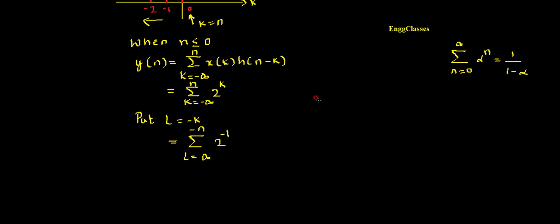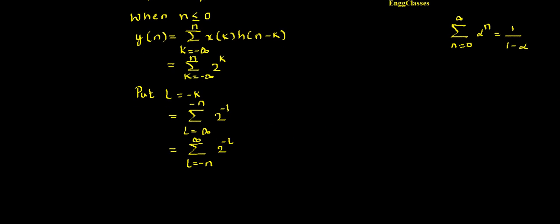I want infinity in the upper limit. I can interchange the limits of summation without adding any negative sign — unlike integration, the direction of addition in summation doesn't matter. So I interchange the limits to get summation from minus n to infinity of 2 to the power minus l, giving me infinity in the upper limit.